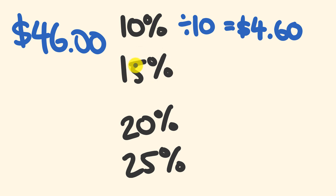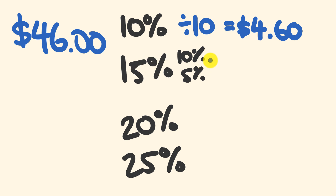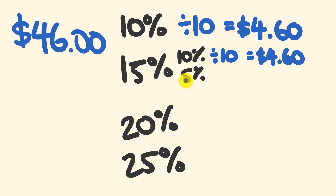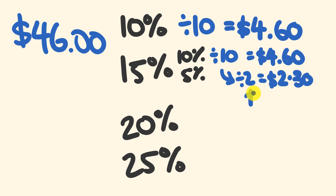Now let's work out a 15% tip. It's made up of two parts: a 10% part and a 5% part, because 10 plus 5 equals 15. We already worked out the 10% part — $4.60. Five percent is half of ten percent, so we halve $4.60 to get $2.30. Then we add the two together: $4.60 plus $2.30 gives a total tip of $6.90.